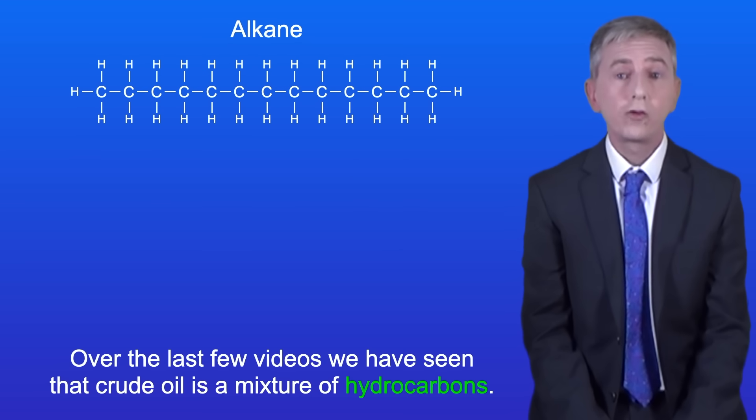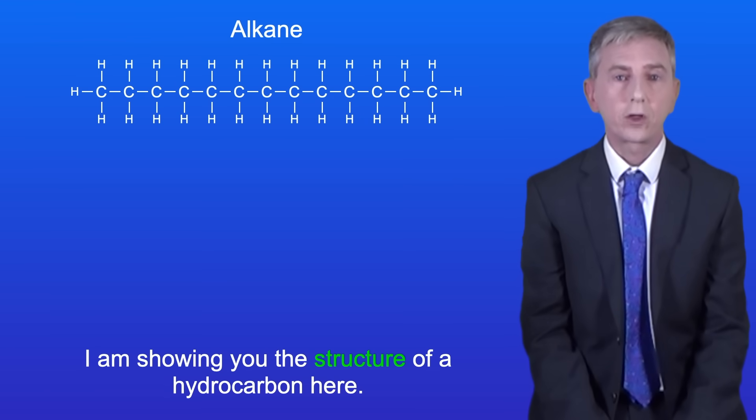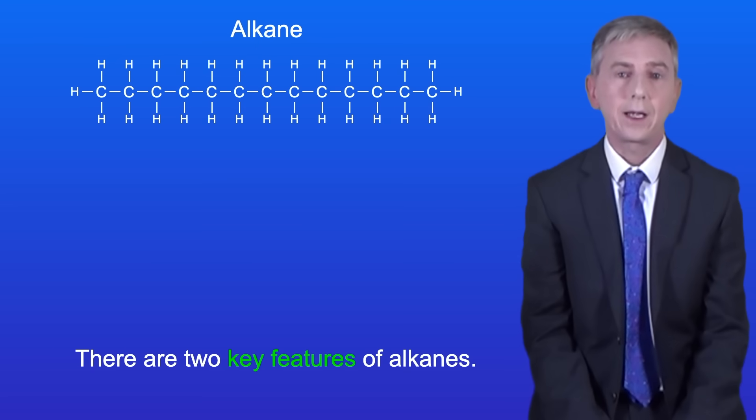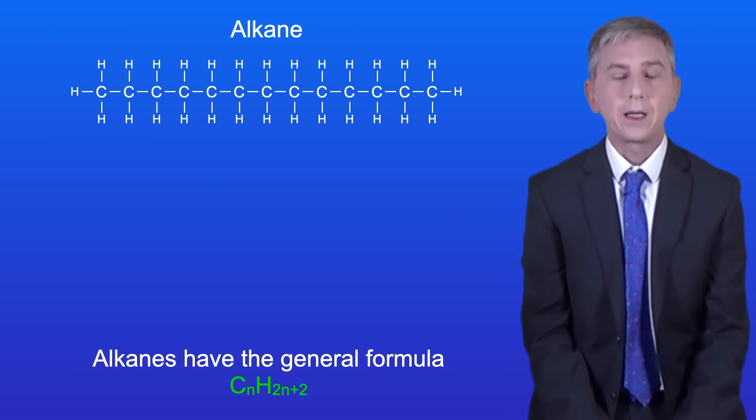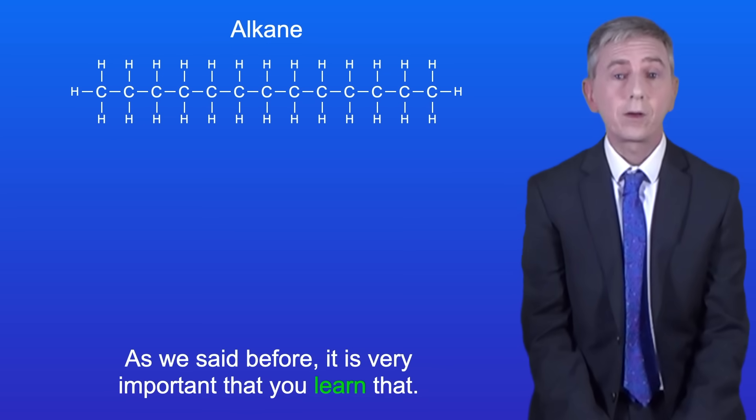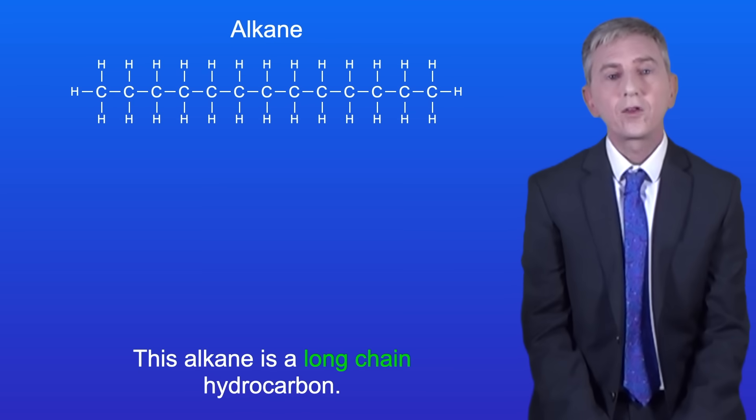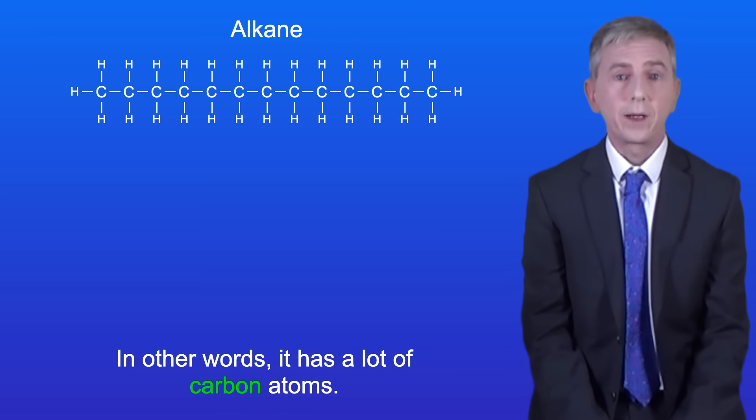Over the last few videos we've seen that crude oil is a mixture of hydrocarbons. I'm showing you the structure of a hydrocarbon here. Now as we've seen, hydrocarbons like this are called alkanes and there are two key features of alkanes. Firstly, alkanes have the general formula CnH2n plus 2 and it's very important that you learn that. Secondly, alkanes only have single covalent bonds between the carbon atoms. Now as you can see, this alkane is a long chain hydrocarbon. In other words, it's got a lot of carbon atoms.